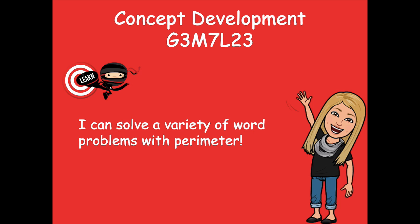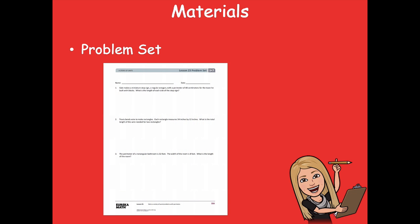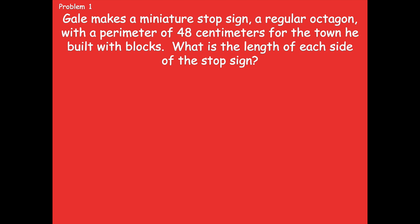I know you guys can do it. We're actually going to walk through several of the problems together today, so it'll be awesome. The materials you need for this lesson are the first page of your problem set, because we're going to do these first few problems together. So make sure you grab that before we get started. Let's take a look at problem one. The question says: Gale makes a miniature stop sign, a regular octagon with a perimeter of 48 centimeters, for the town he built with blocks. What is the length of each side of the stop sign?